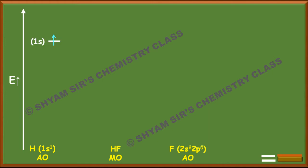Write the 1s orbital of hydrogen (1s¹) on the left. On the right, write only the valence shell of fluorine starting from 2s²2p⁵, as the 1s of fluorine is too low in energy for our scale. The 2p of fluorine at -18.6 eV sits slightly lower than the 1s of hydrogen at -13.6 eV; this difference is due to the higher electronegativity of fluorine.